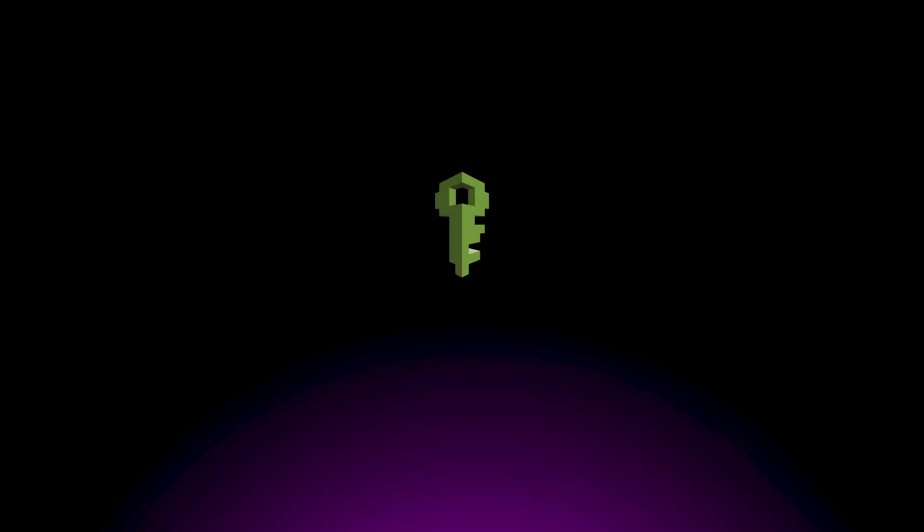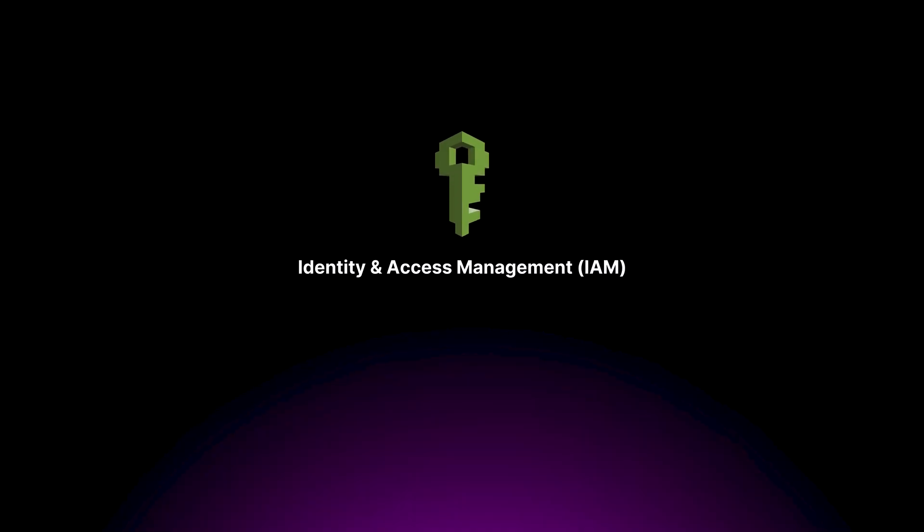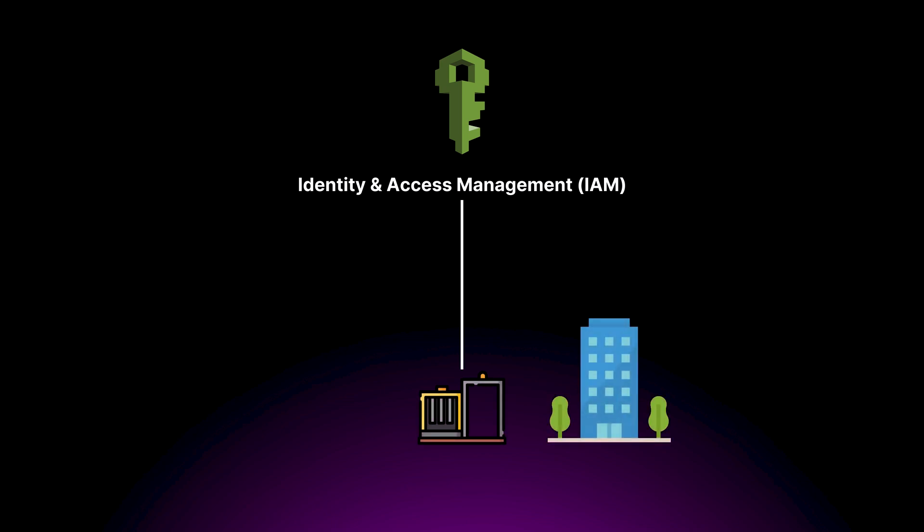Now let's move on to the next critical aspect of securing your cloud environment — implementing strong identity and access management. Think of IAM like the security system of a building. It's responsible for controlling who can enter the building, which floors and rooms they can access, and what actions they're allowed to perform once inside. Getting IAM right is crucial because, just like a building, you want to make sure only authorized people are getting in and they're not accessing areas that they shouldn't.